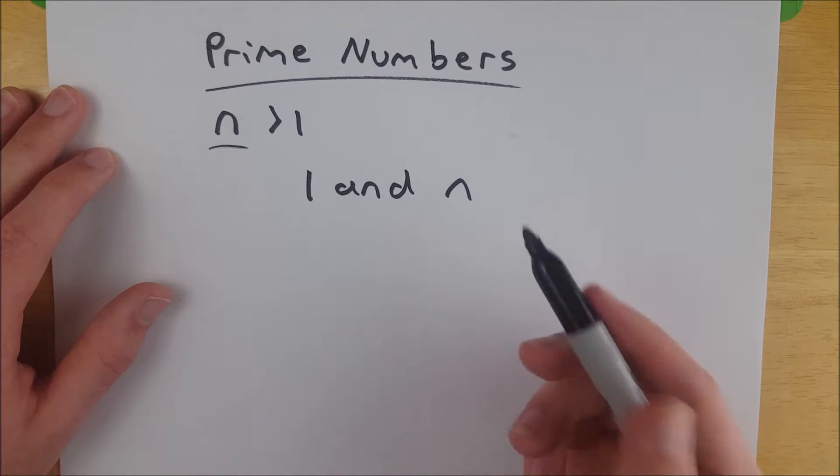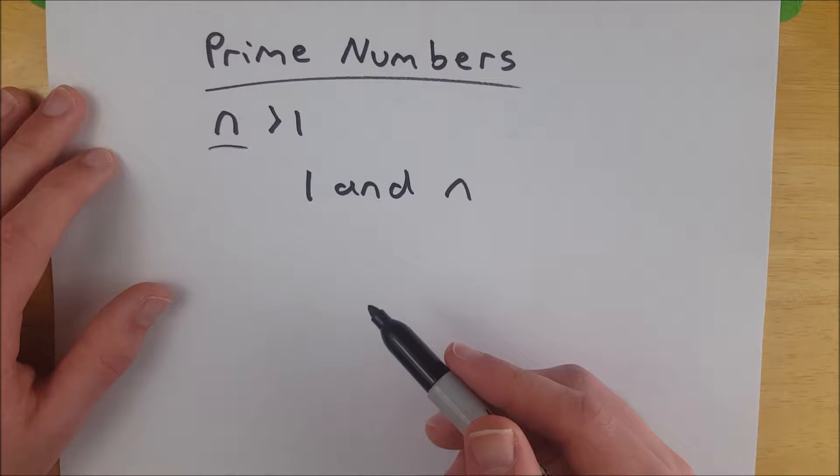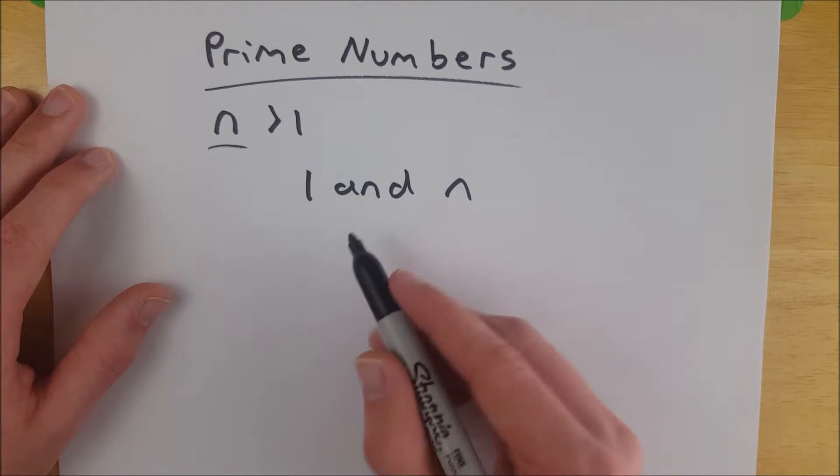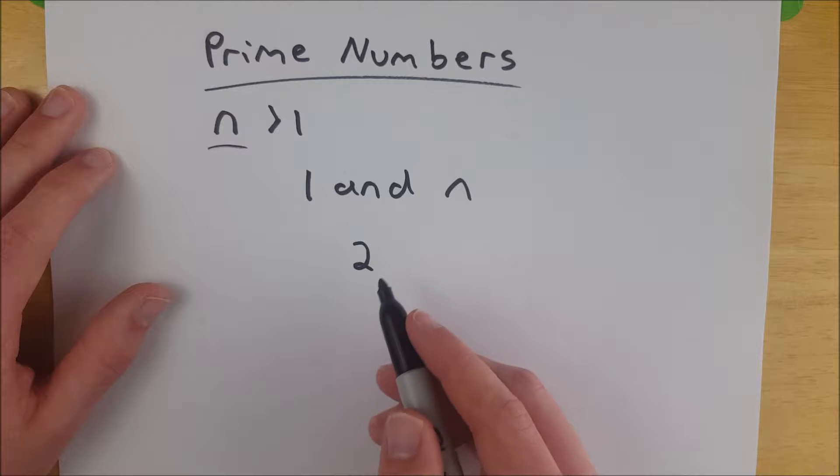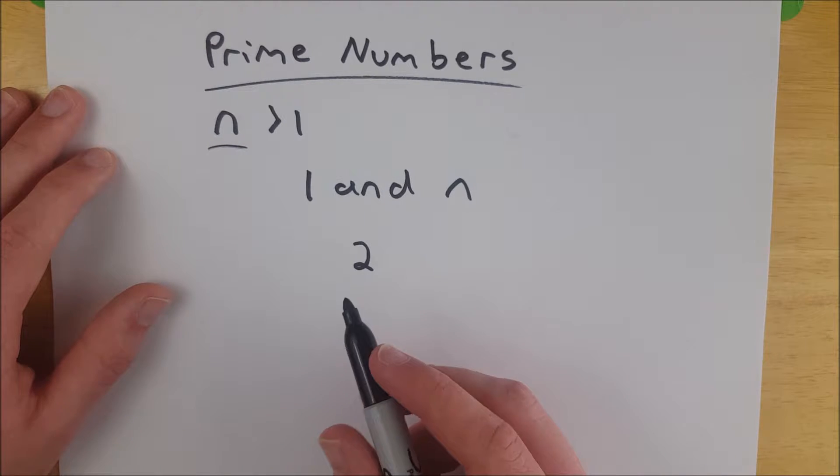So what is such a number? Well, the first one and also the only even one is two. Two is our first prime number and our only even prime number.